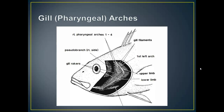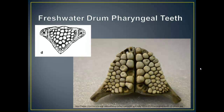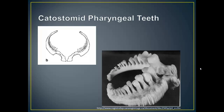If we look at this image from Fishes of Tennessee, it shows the four pharyngeal arches or gill arches and the rakers on the anterior part. Then we have that fifth arch that gets modified. There are lots of types of pharyngeal teeth — this is the classic example of molar-like teeth in the freshwater drum, which are used for crushing mollusks. In the right picture is another example of molar-like teeth.